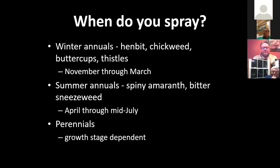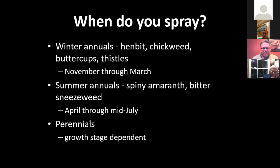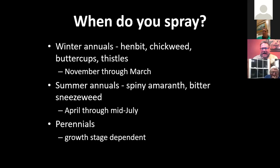When do you spray? Winter annuals are typically November through March. Summer annuals are April through mid-July. Perennials are growth-stage dependent — when they're the most actively growing, that's when you want to make the herbicide application. Mid-July is by far the furthest you should push summer annual applications. When we move into late July, August, and September, sometimes we are really dry. When weeds get dry and stressed, they harden off and don't take up herbicides as readily as when they're lush and actively growing. So get them early, get enough leaf tissue, but get them as early as you can.